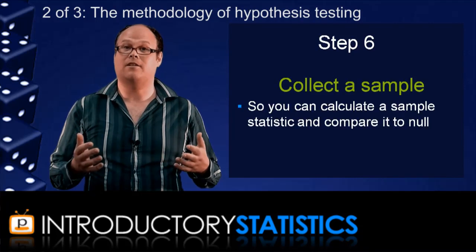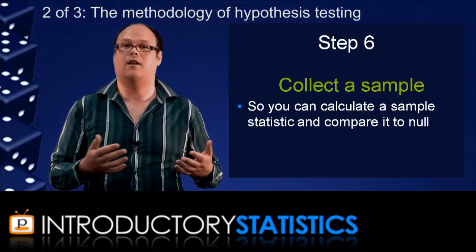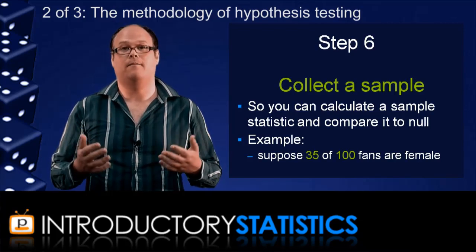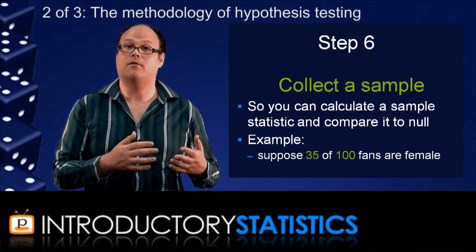So let's say you collect a sample of 100 basketball fans and that 35 of them are female. This gives a sample proportion of 0.35.